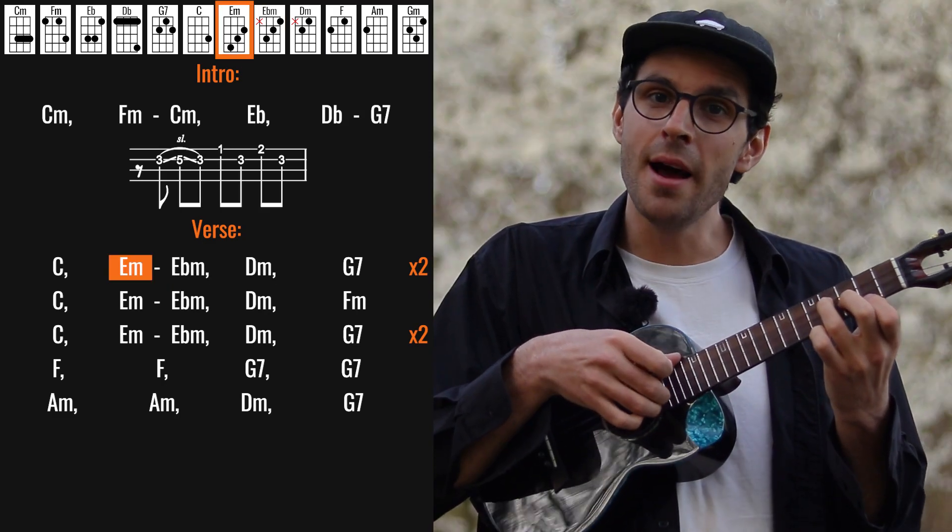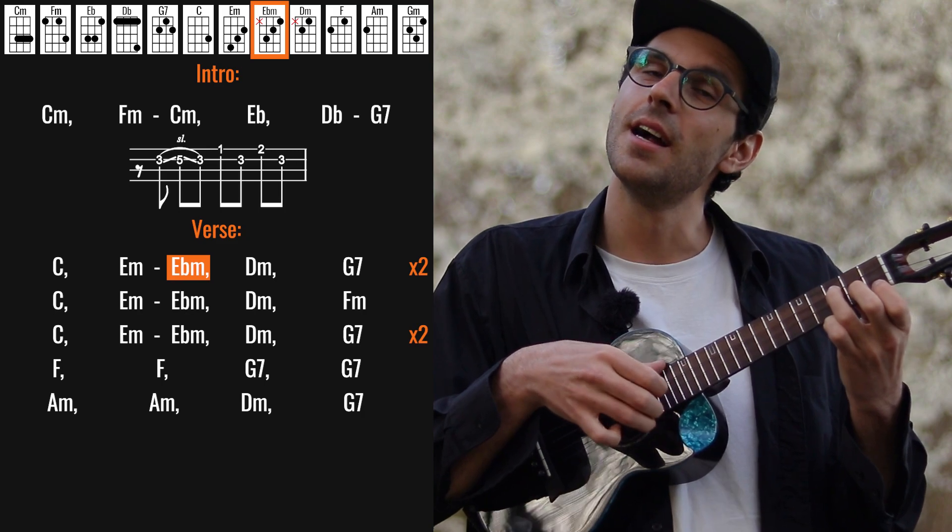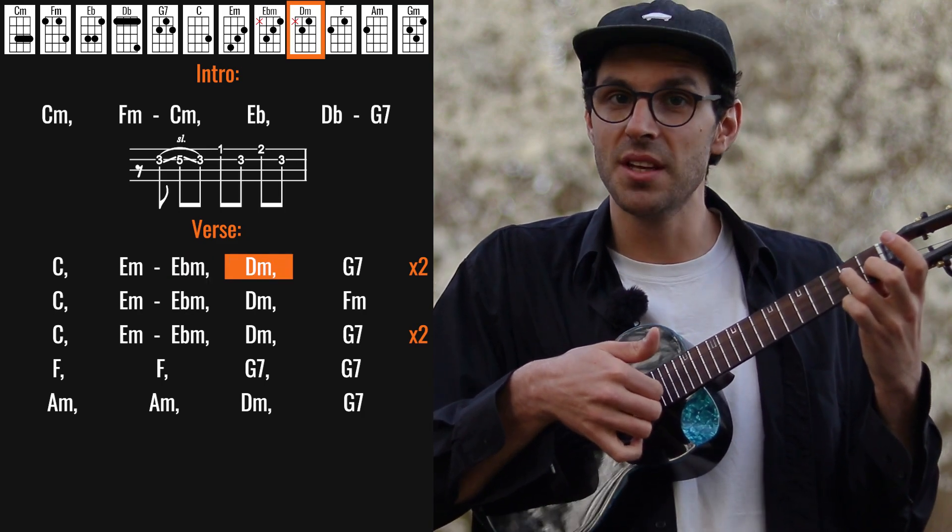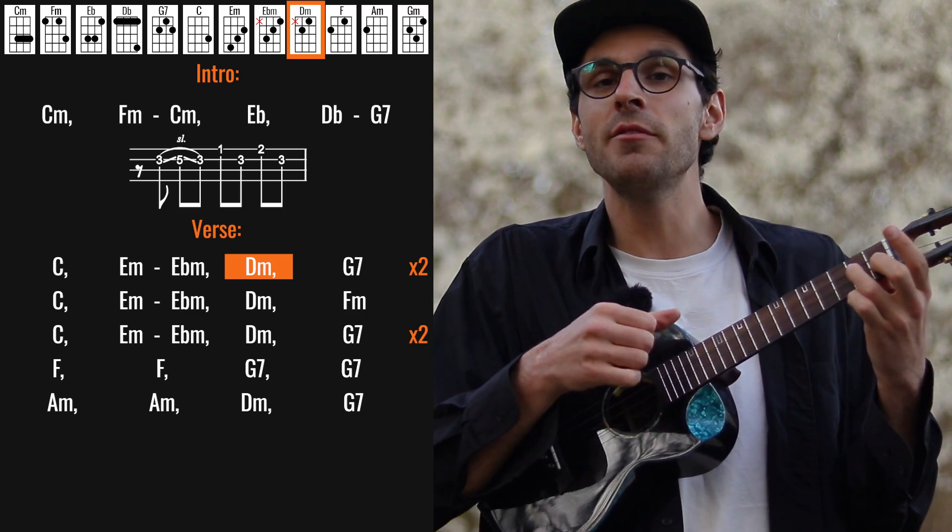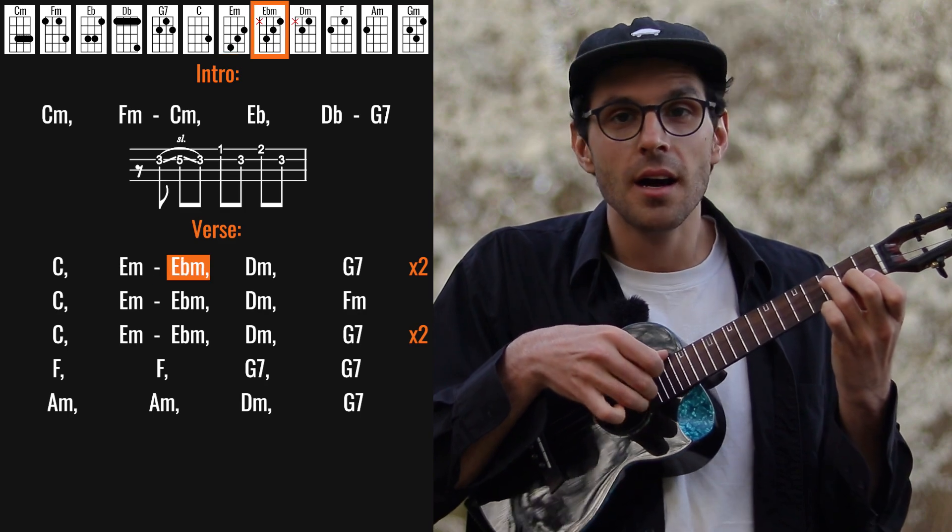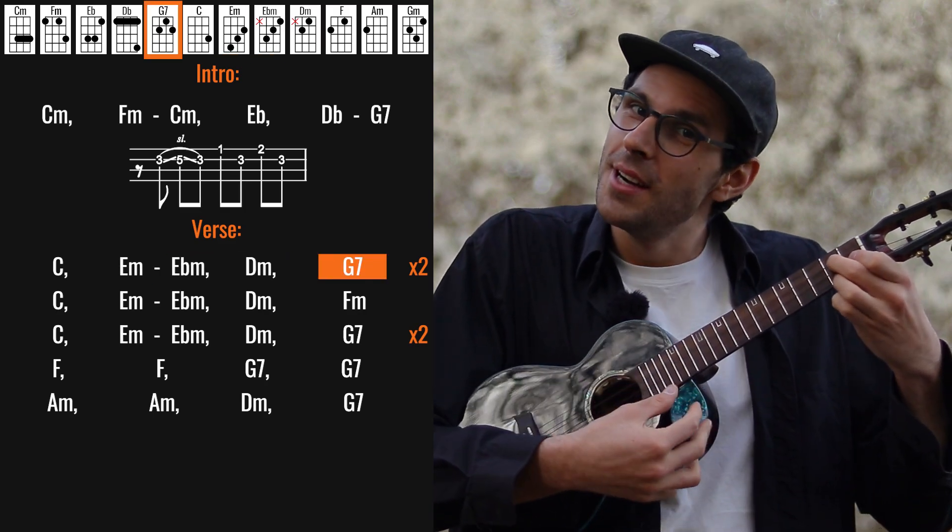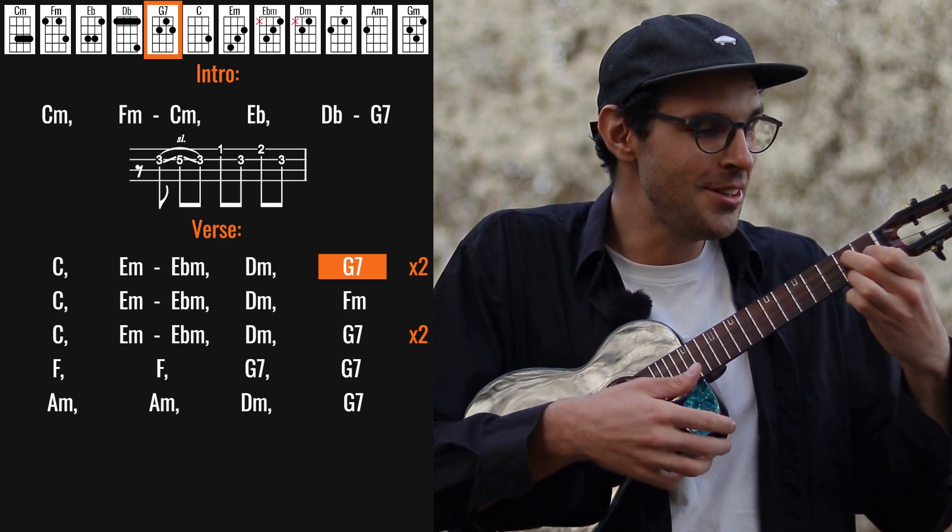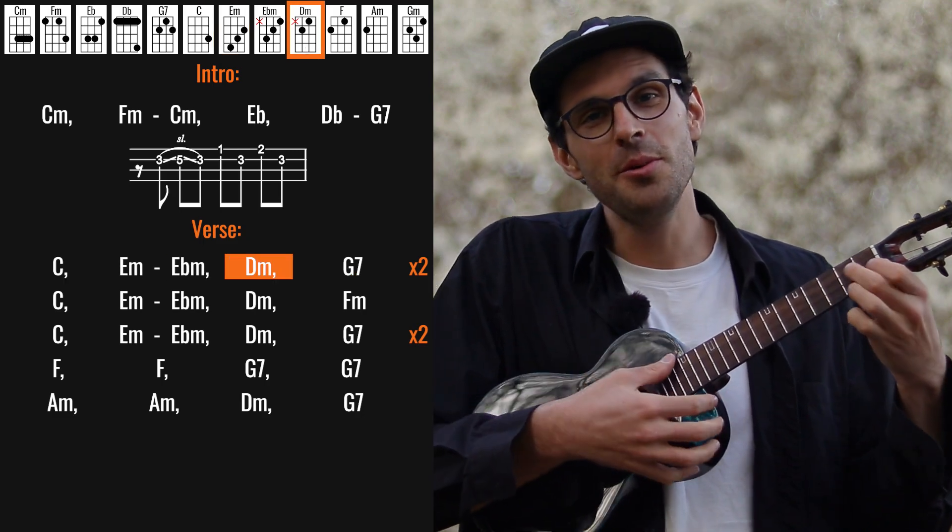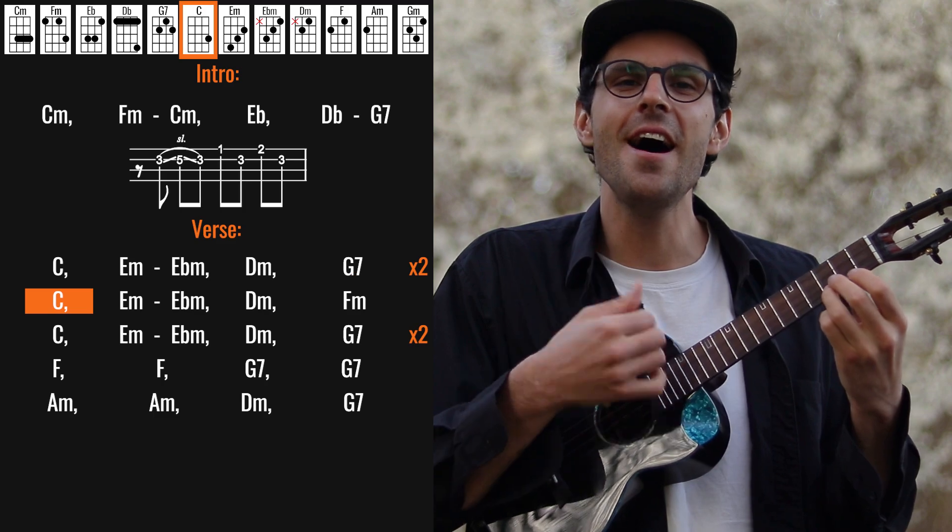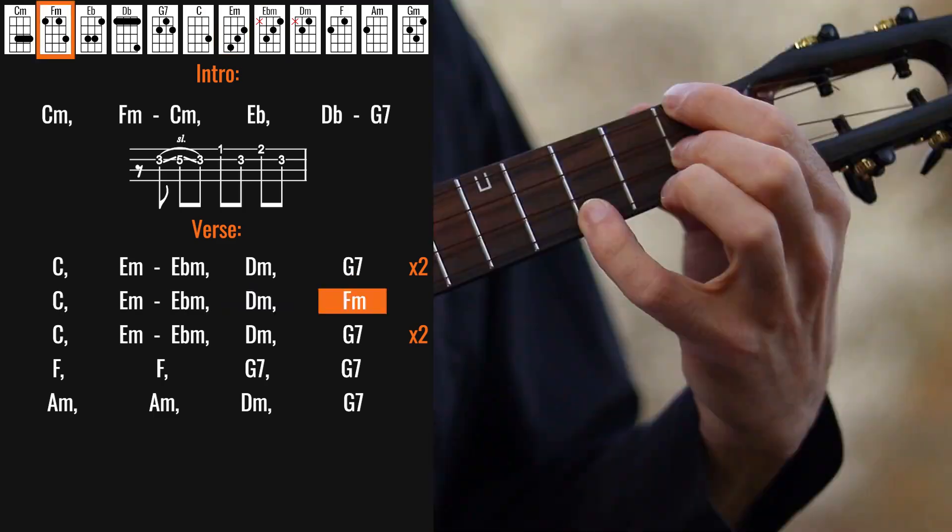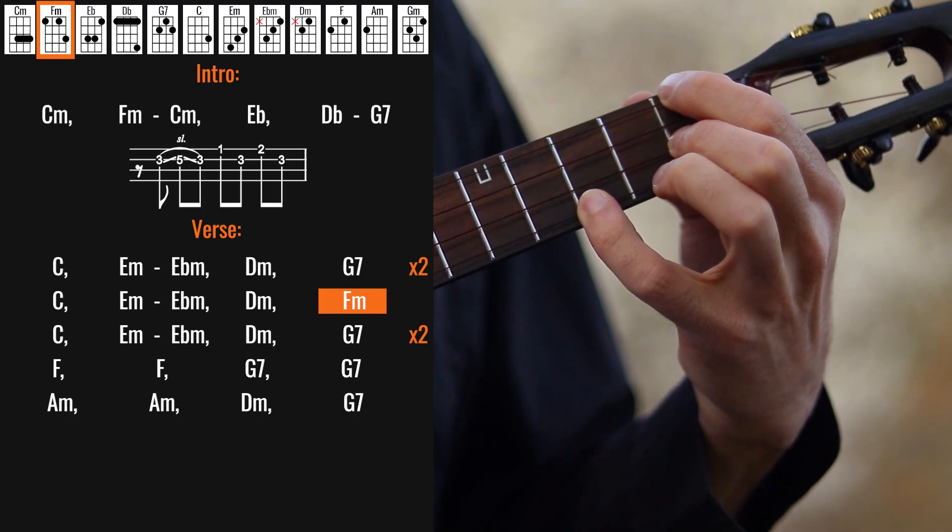And on D minor I'm playing the three strings together but again I'm avoiding the G string. So listen, do you want to know a secret, to G7. Do you promise not to tell. And on the third time we go to F minor.